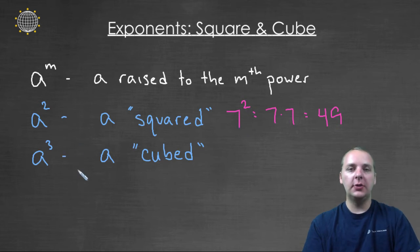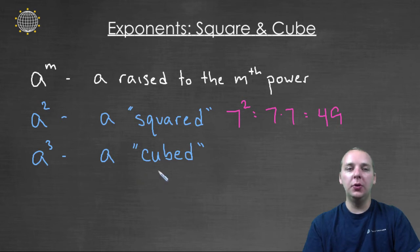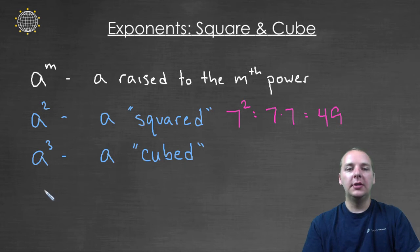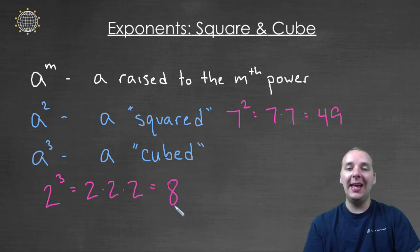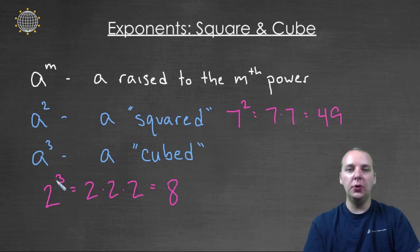And if we have something raised to the third power, then we say that that number is cubed. A raised to the third power is A cubed. For example, if you have two raised to the third power, which is two times two times two — two times two is four, and four times two makes eight — so eight is the same as two cubed.